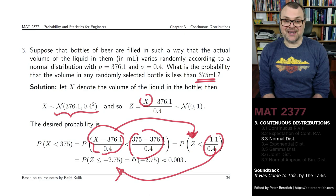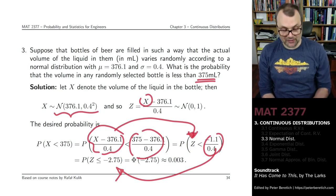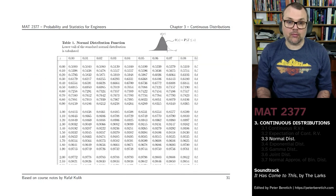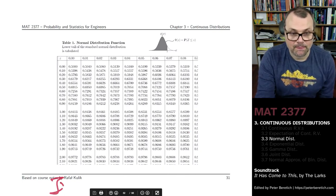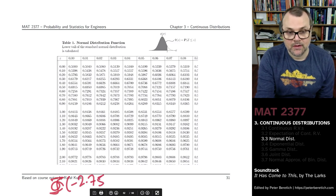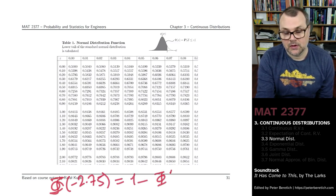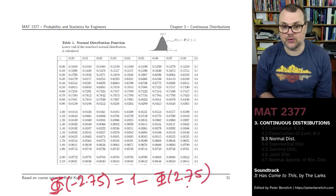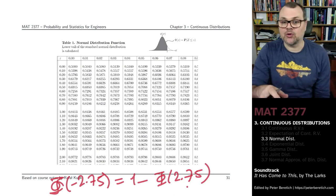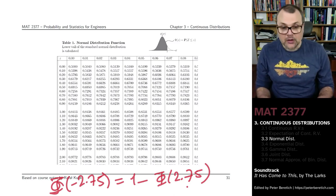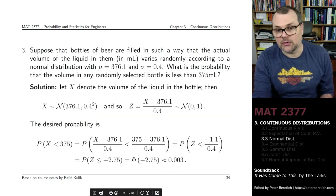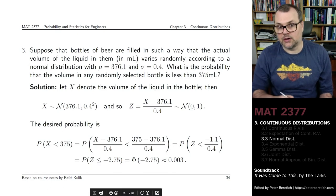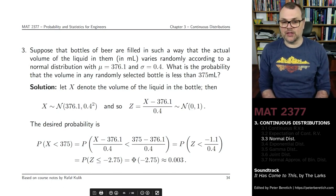We want P(X < 375). Subtracting 376.1 and dividing by 0.4 on both sides: P(Z ≤ (375 − 376.1) / 0.4) = Φ(−1.1 / 0.4) = Φ(−2.75). From the table, Φ(2.75) ≈ 0.997, so Φ(−2.75) = 1 − 0.997 = 0.003, about 0.3%. On the tables you would have for your tests, you'd be able to see that the CDF at −2.75 is about 0.3%.